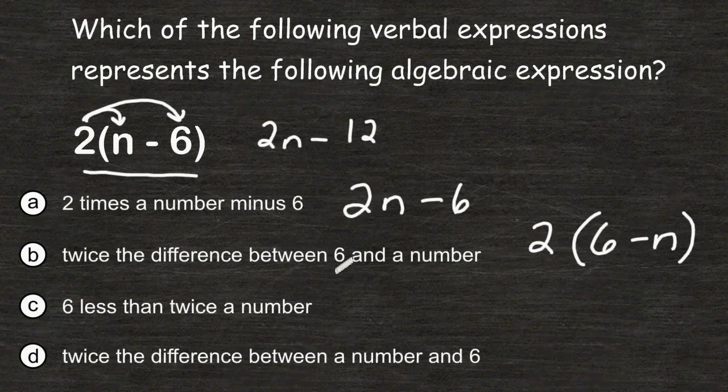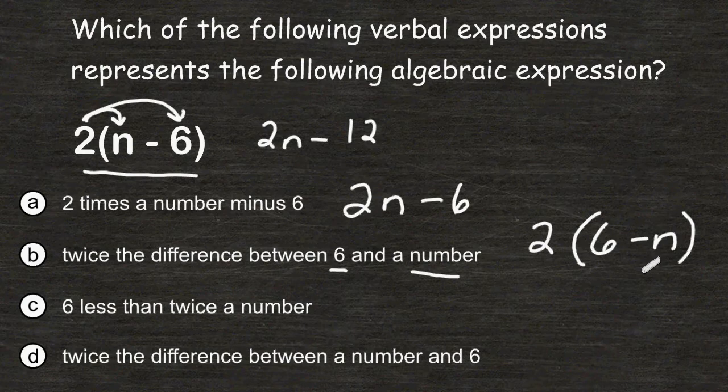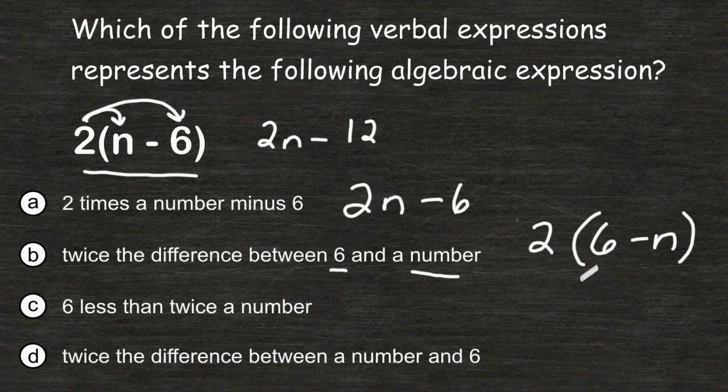But notice they said 6 first and a number second. So if we write that in that order, understand that when you subtract terms together, it does matter what order they are in, and our expression that's given says n minus 6. So even though it seems like that could be the answer at a glance, that is actually not the answer.